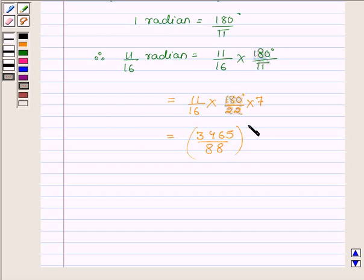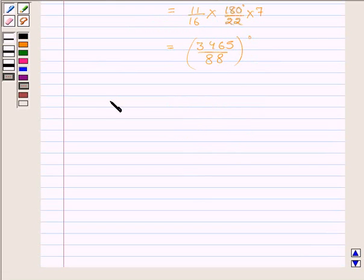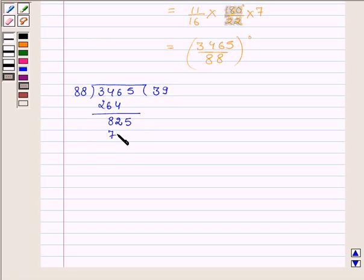And now let us divide 3465 by 88. 88 into 3 is 264. 82 is the remainder when 264 is subtracted from 346. Now we have 5. 88 into 9 is 792, and now the remainder is 33.